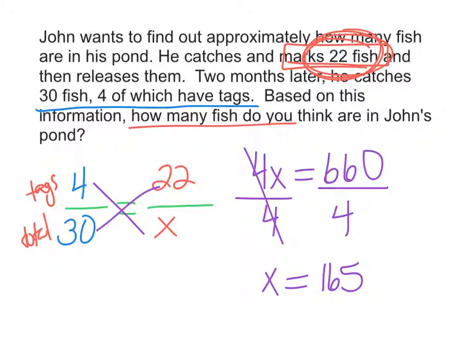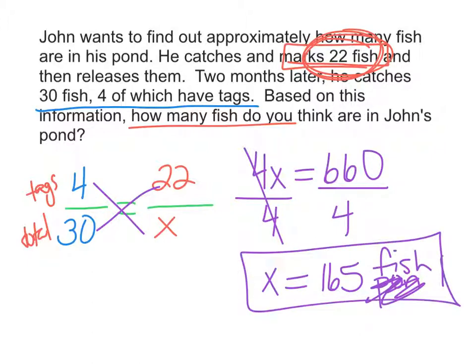So we would predict, based on this information, there are 165 fish in John's pond. Those are some examples of how to write proportions when dealing with the capture and recapture method.